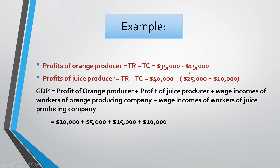$35,000 minus $15,000 gives $20,000 as the profit of the orange producer. The profit of the juice producer works out to $5,000, plus $15,000 which is the wage income of workers at the orange producing company, plus $10,000 which is the wages of workers at the juice producing company. By adding these together we again get $50,000 as the GDP — the same amount obtained using the product method.